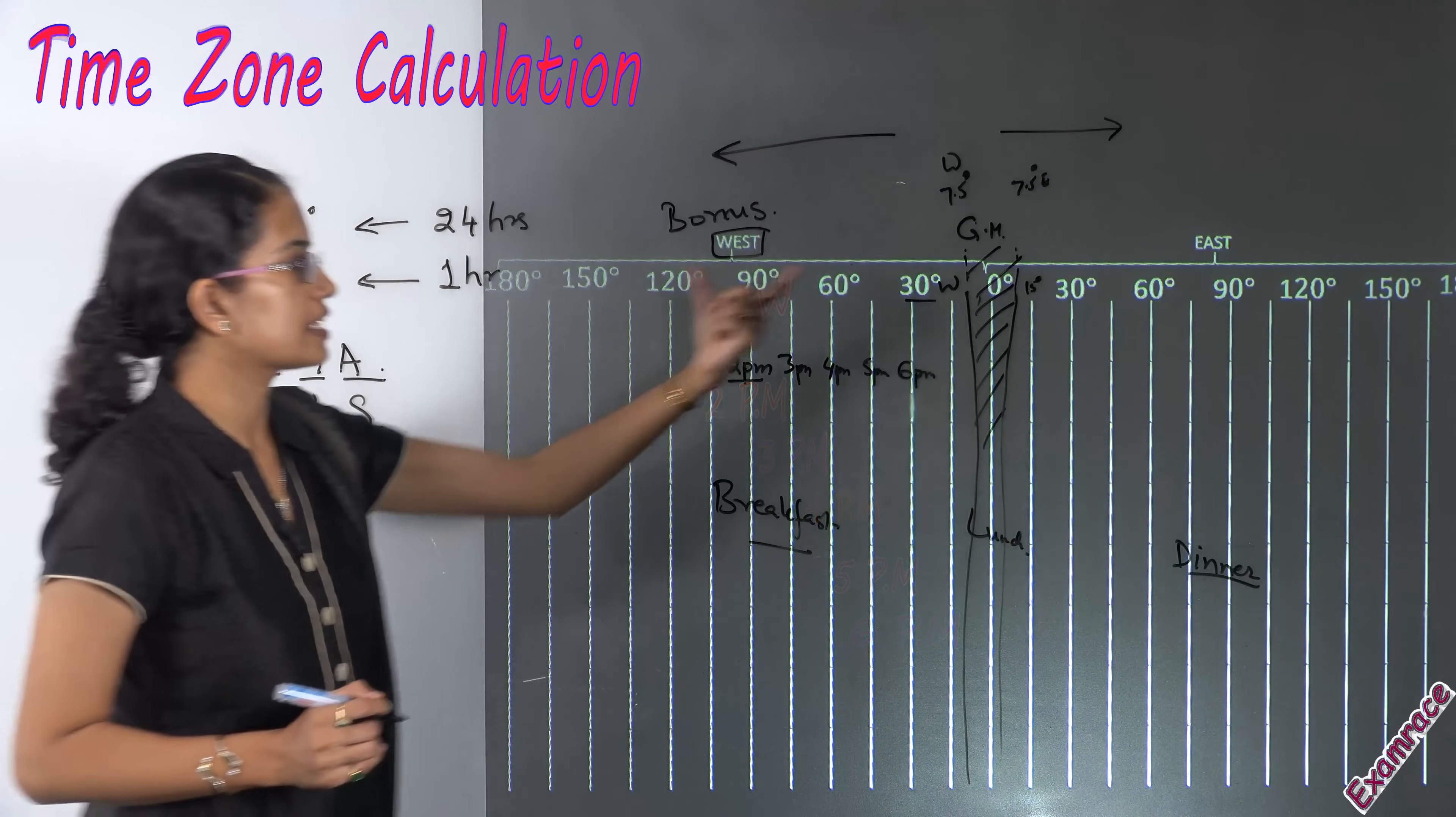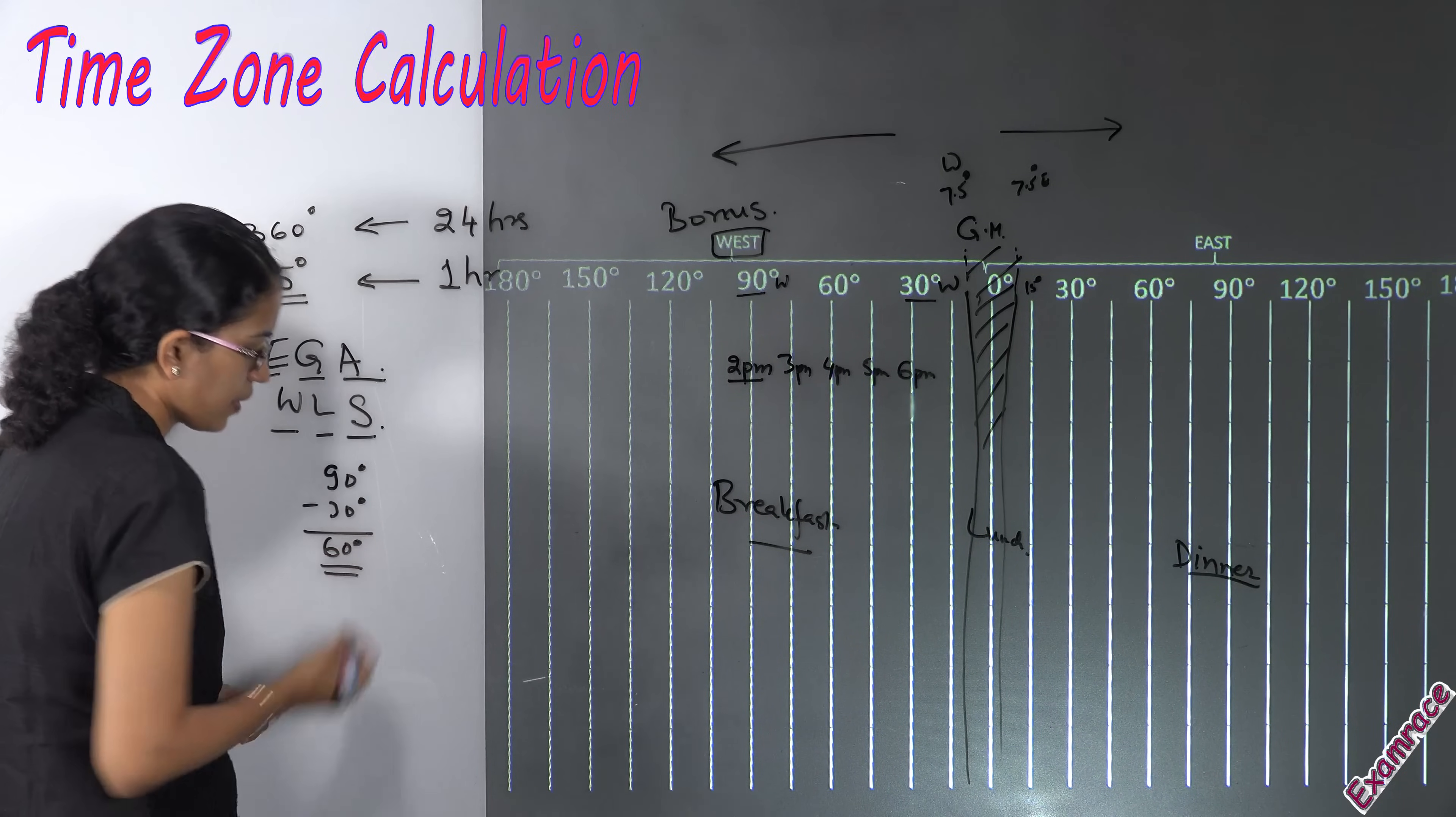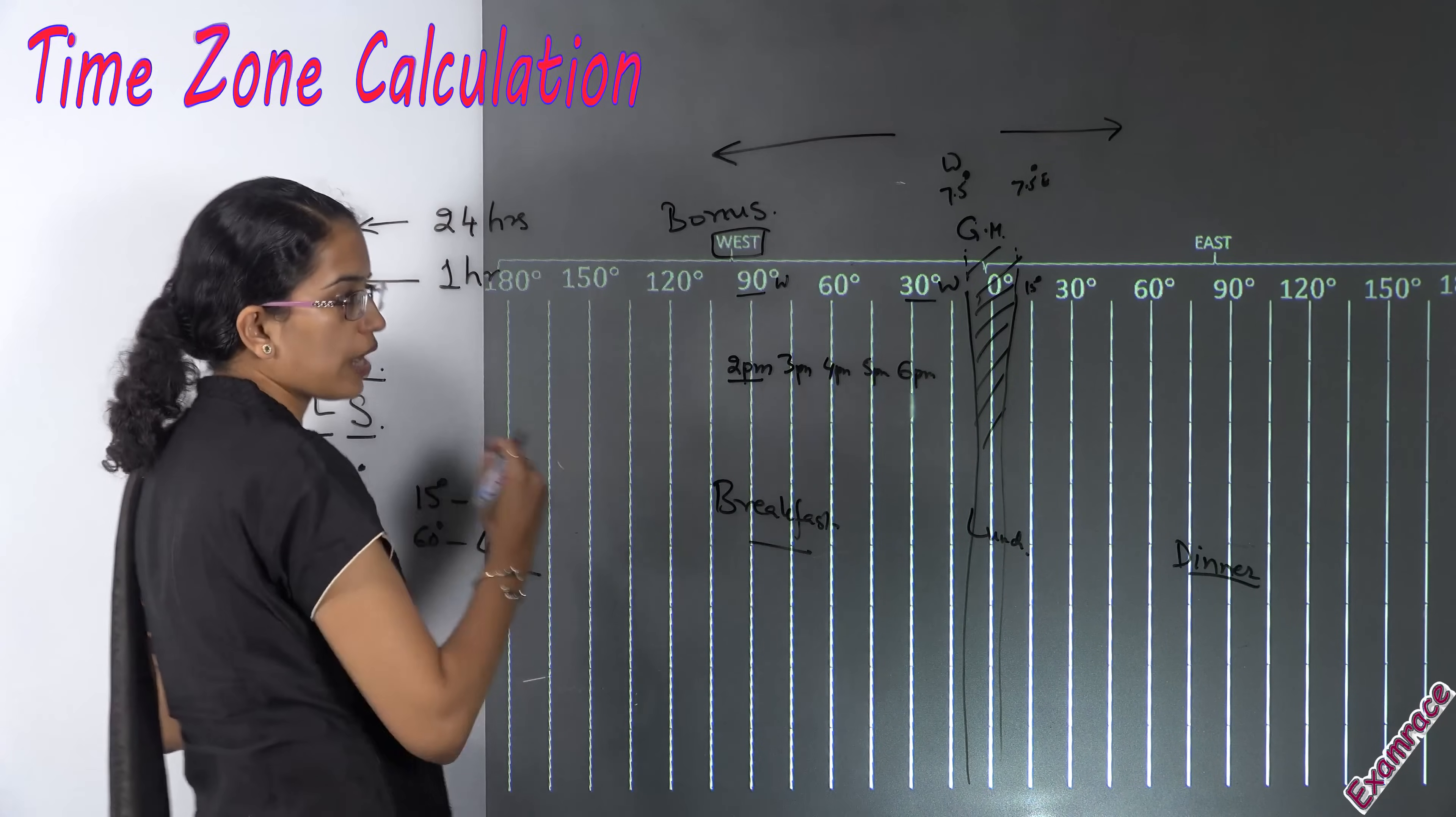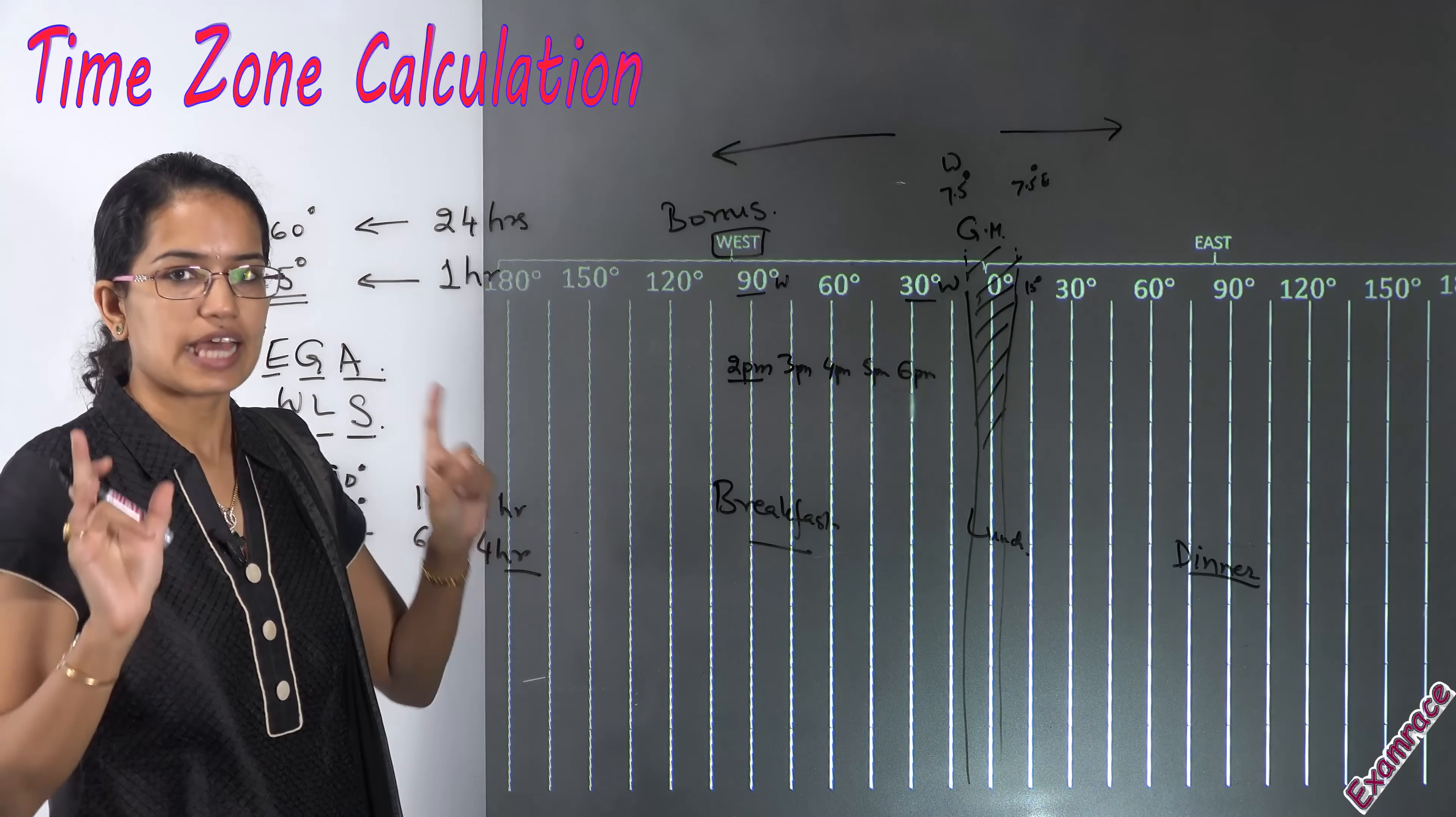The other way of solving the same question is I can take a difference of the longitudes that is 90 degrees minus 30 degrees which gives me 60 degrees. Now for 15 degrees you have one hour. So for 60 degrees you would have 4 hours in hand and therefore you are moving towards eastern side. So 2 PM plus 4 gives me 6 PM.